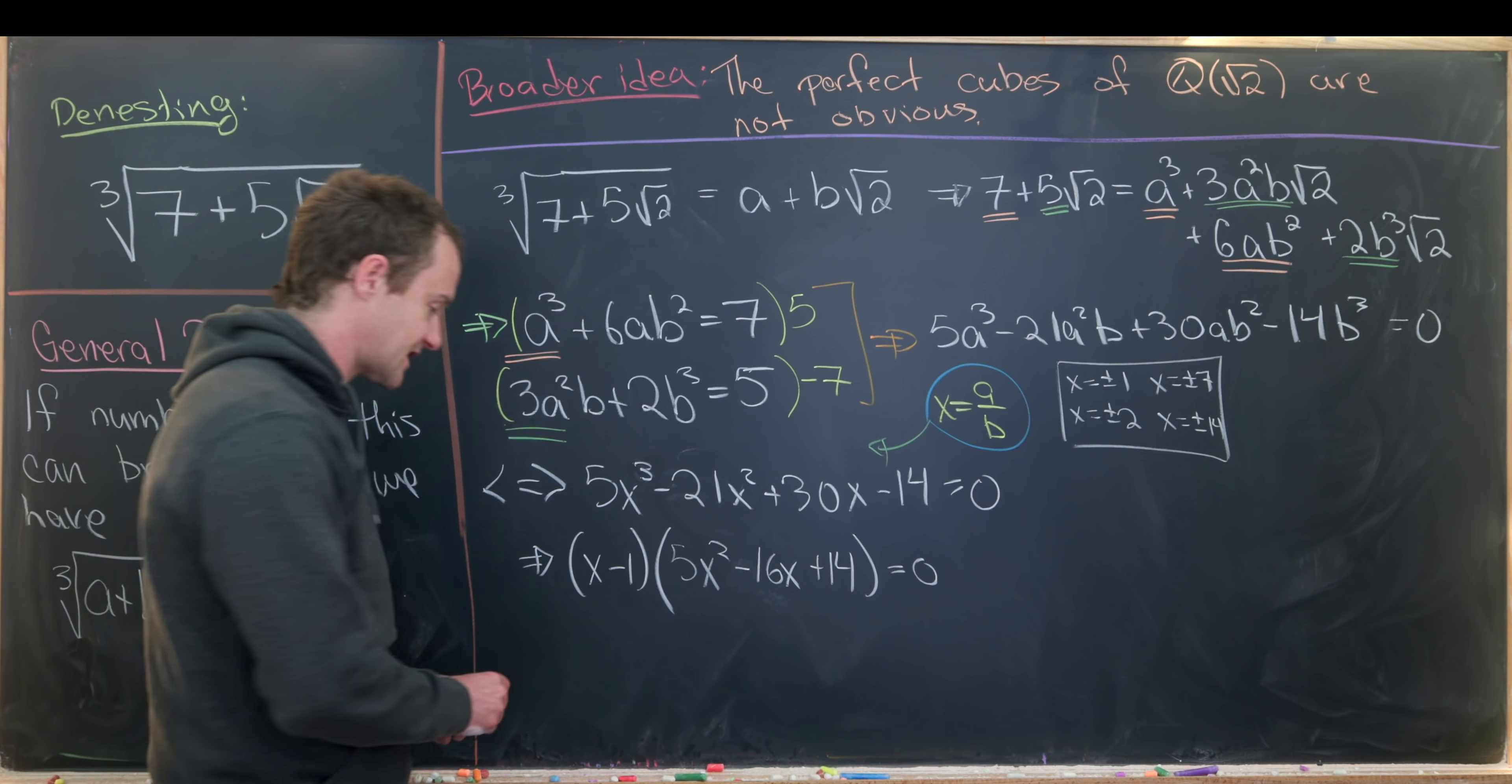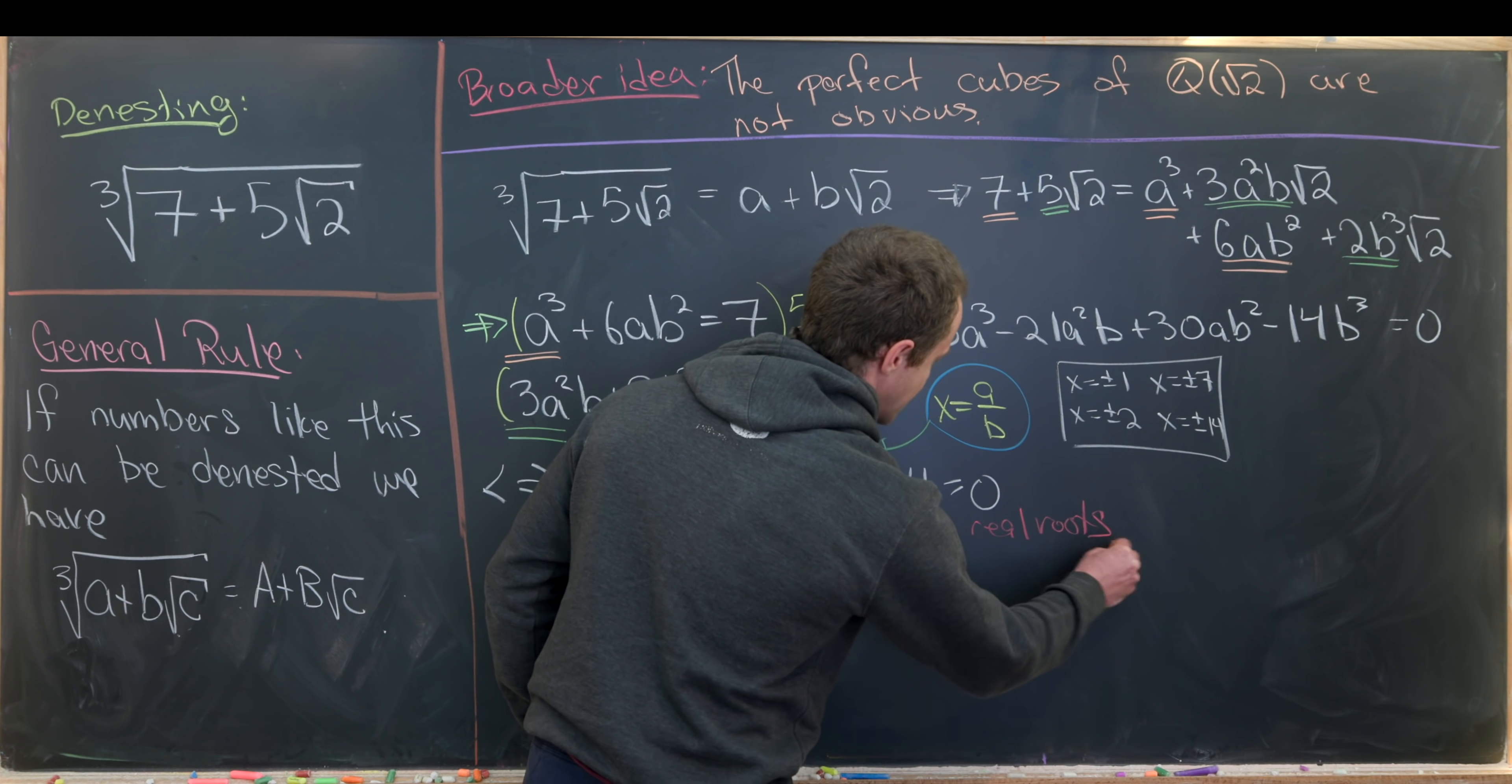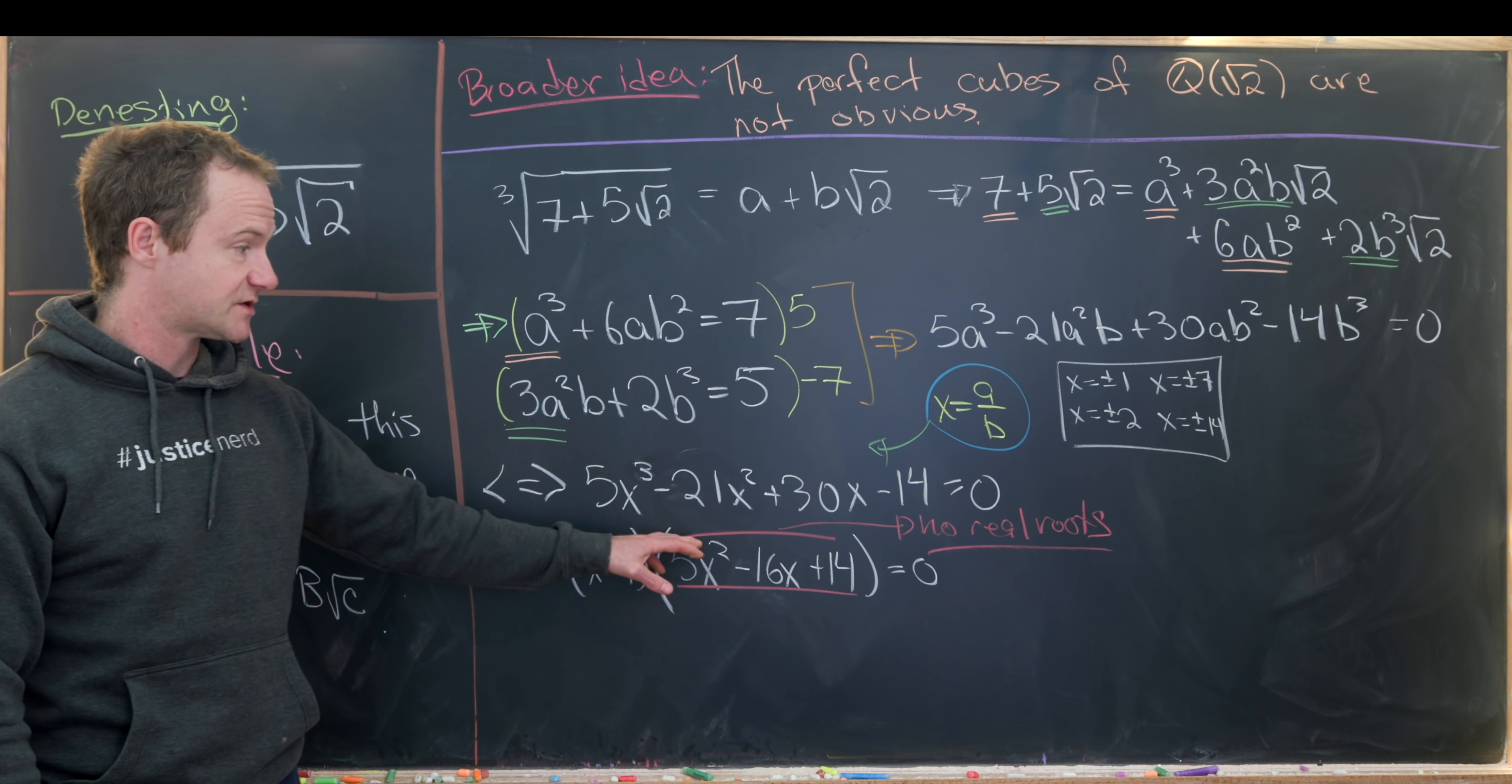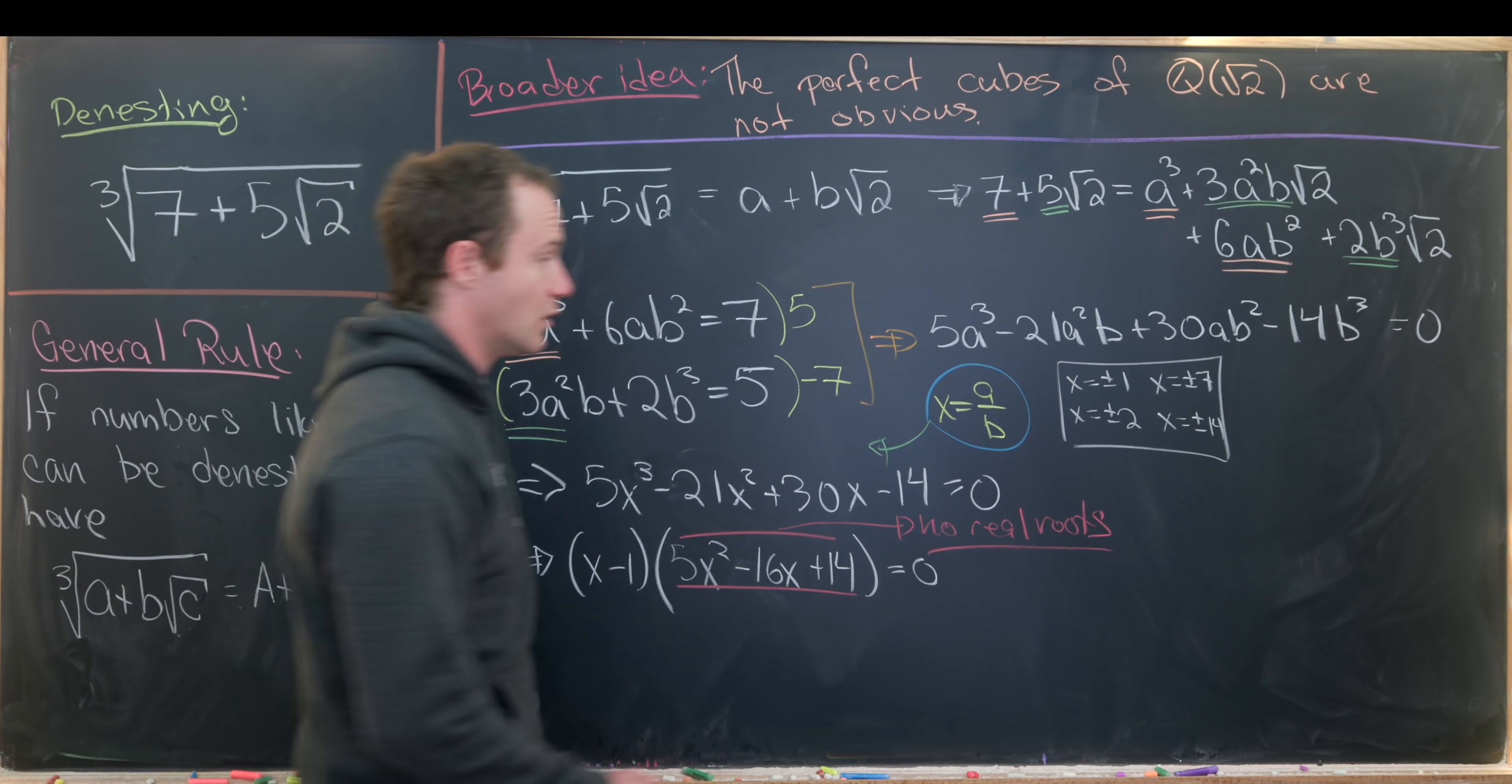So now we can check that this guy right here this quadratic polynomial has no real roots. So that's important because we really just want rational roots. And definitely this thing on the left hand side is a real number. So that means this thing on the right hand side needs to be a real number. So since we have no real roots that means that this whole thing being equal to 0 means that x must be equal to 1.